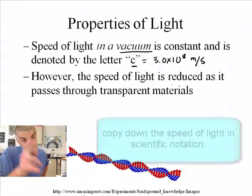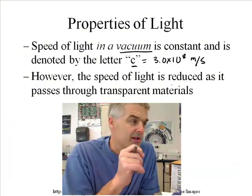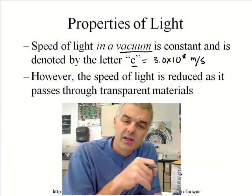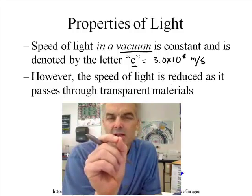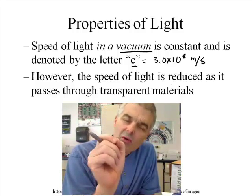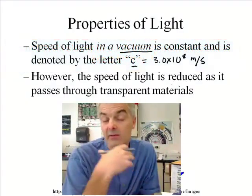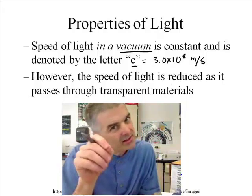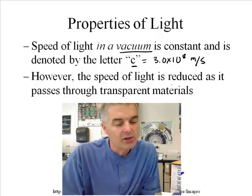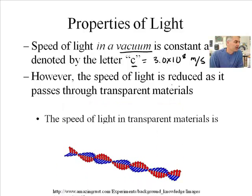Interesting thing happens, and this is going to be important when we talk about telescopes in our next chapter. The speed of light is reduced as it passes through transparent materials. So, if I were to have a diamond in my hand, that diamond light would travel slower through the diamond than it does through a vacuum, or air for that matter. It's not a lot slower, but a little bit. In fact, that's what gives diamonds and precious gems kind of some of their beauty.